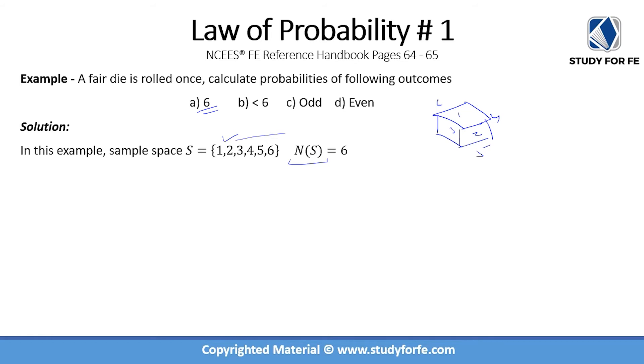Now when we calculate these individual properties, then we will basically do N(A) divided by N(S). Now N(S), number of possible outcomes in the sample space, is equal to six, so the denominator will always remain six. The only thing that will change depending on the option that we're looking at will be the numerator.